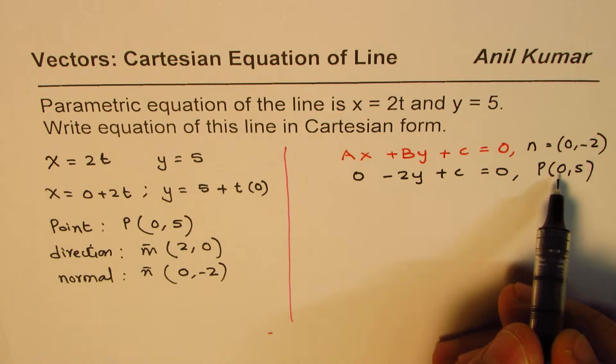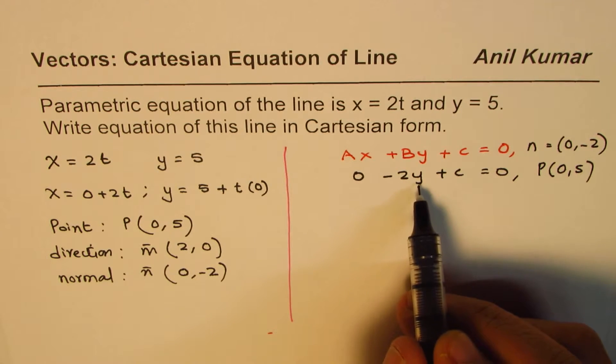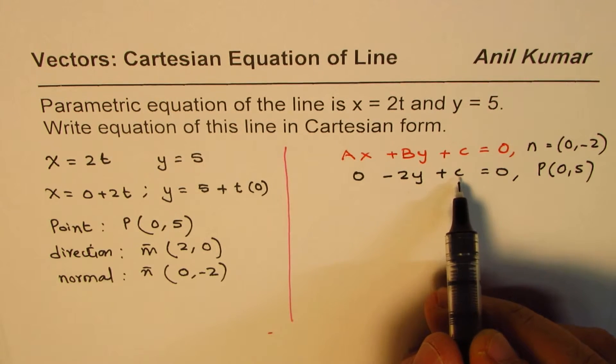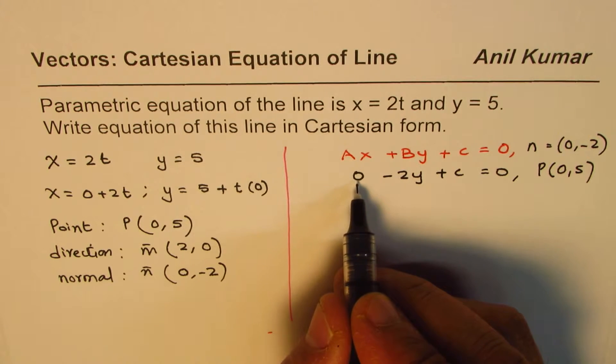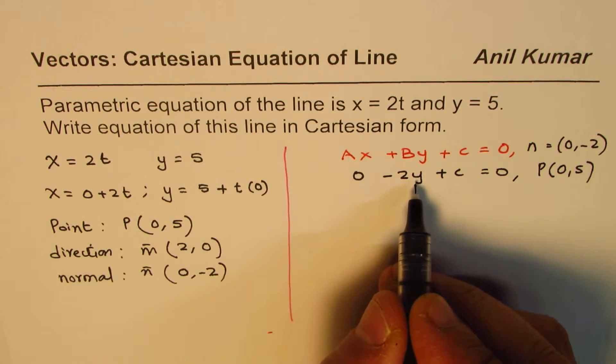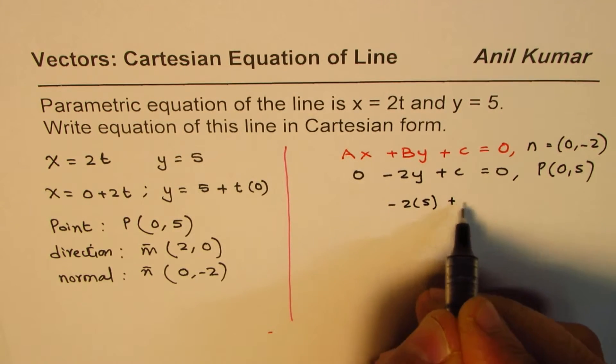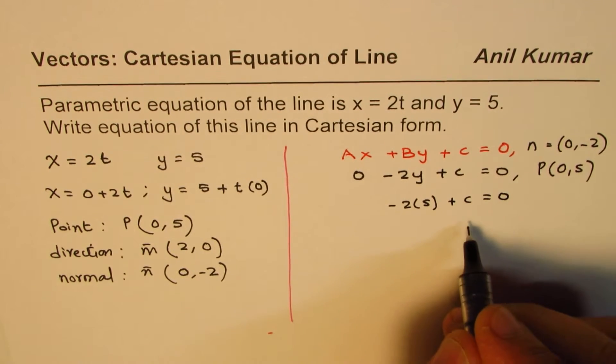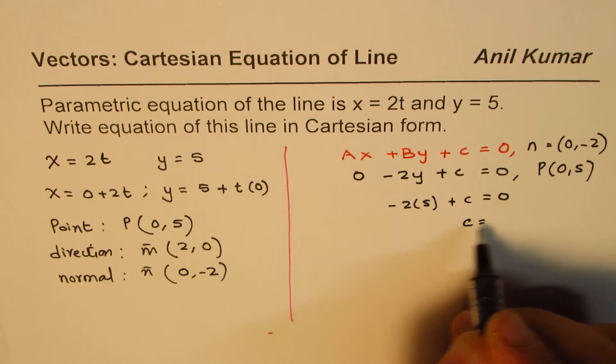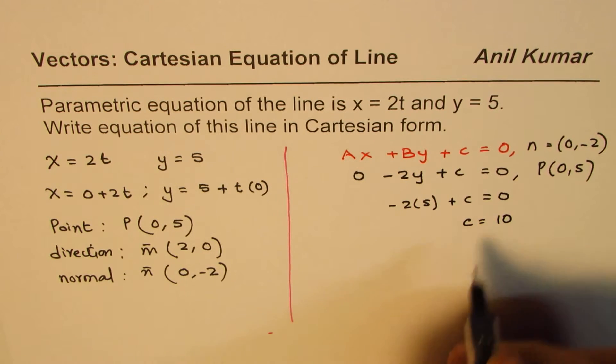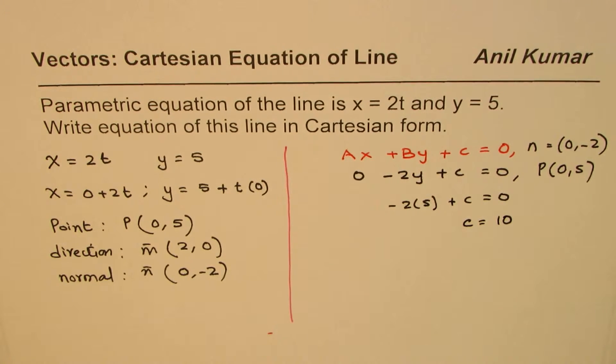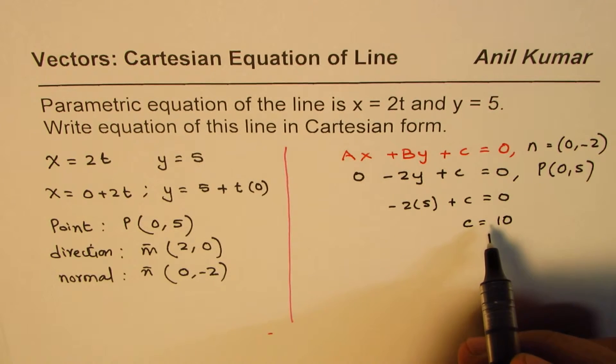So if I substitute 0 for the value of x and 5 for the value of y, I can calculate the value of c. There is no need to put 0 here but we can put 5 here. So we have minus 2 times 5 plus c equals 0, or c equals 10.